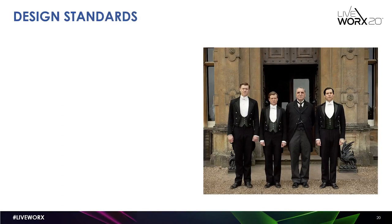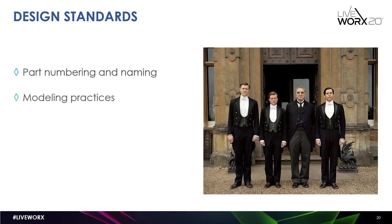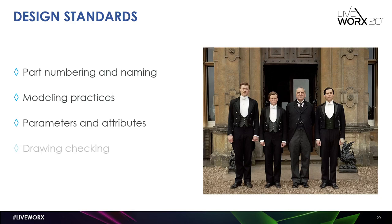Speaking of design standards, you're going to need them. Design standards ensure that people create models and drawings in accordance with your company's standards and increase uniformity to avoid models and drawings having their own unique styles. You don't want your company's deliverables to look like 20 different people created your drawings, even if they did. These standards include your part number and naming scheme, your modeling practices — including how you manage bottom-up and top-down design, and guidelines for sheet metal, cable harness design, piping, ECAD, mechanisms, and more — and the parameters and attributes that support data management and data reuse, as well as your drawing checking and release processes. Be prepared to get these wrong. It may take several attempts to figure out what works for you. If you have to start over, it's better done sooner rather than later.